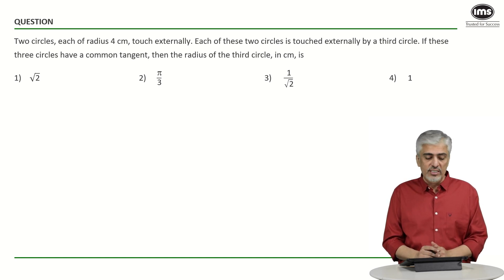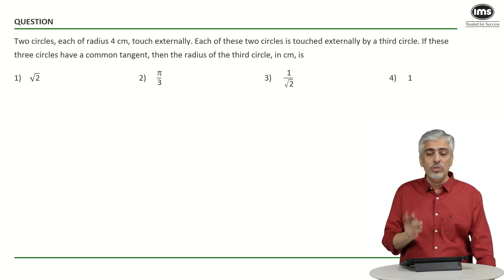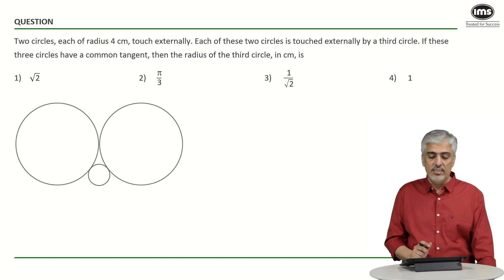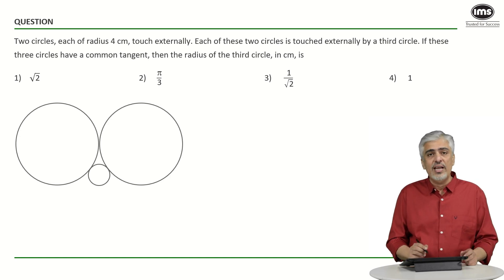So two circles each of radius 4 touch each other externally. Let's try and have the diagram first. Each of these two circles also touch externally by a third circle. So these are the three circles we will have.